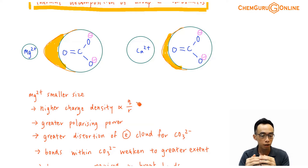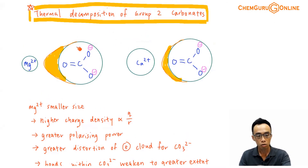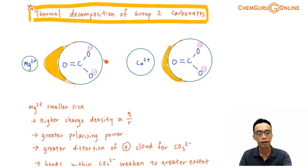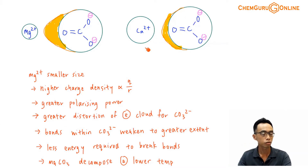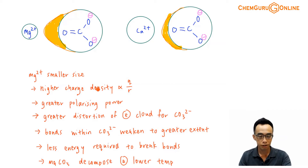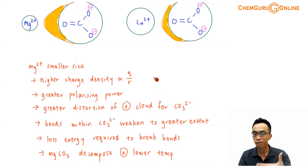If it has a higher charge density, then you have a greater polarizing power — a greater ability to distort or disturb the electron cloud of a neighboring species. If I consider Mg2+ versus Ca2+, Mg2+ is higher up in the period and therefore has a smaller size. The charge is the same but the size is smaller, so charge density for Mg2+ is higher, giving it greater polarizing power.